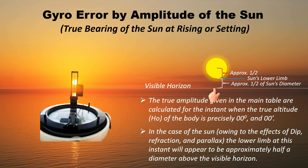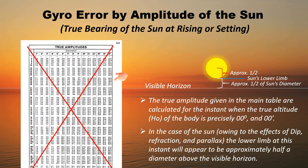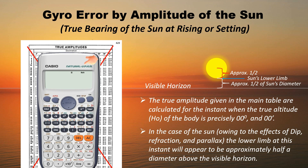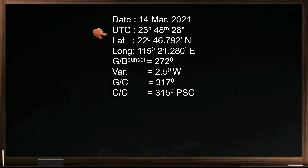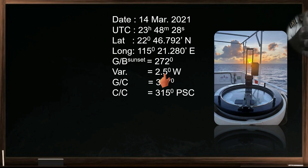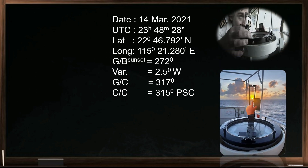In this video, we won't use the amplitude table. Instead, we'll use a scientific calculator to find the sun's true amplitude. If you'd like to learn how to use the amplitude table, feel free to leave a comment below, and I'll make a separate video on that. To start, we need to gather the following information. I will choose the sun as our celestial body, and we will take the gyro bearing during sunset.